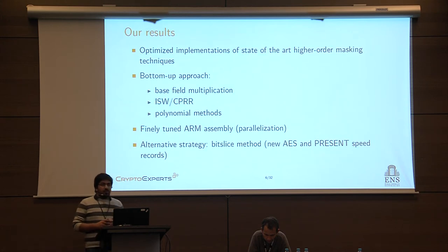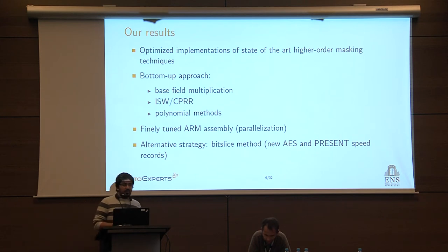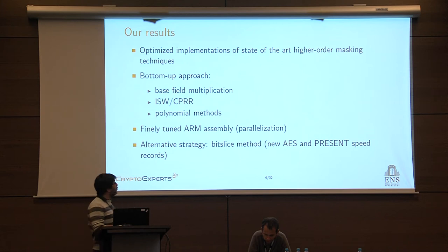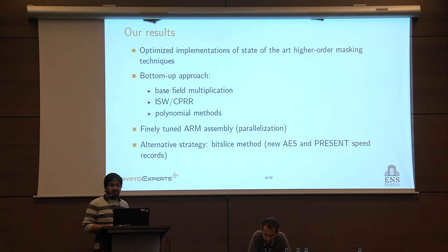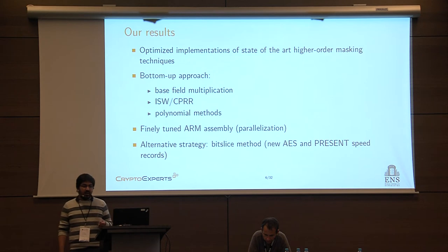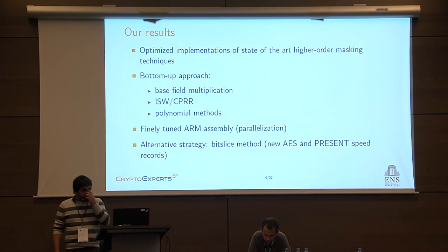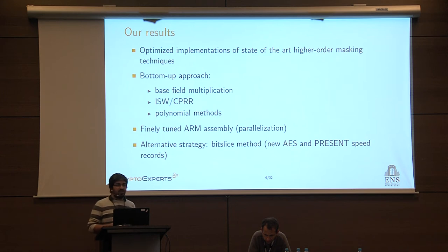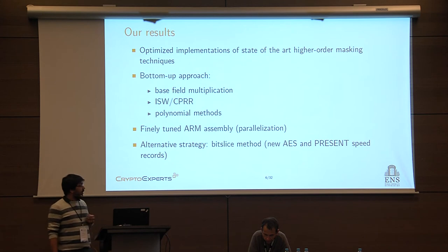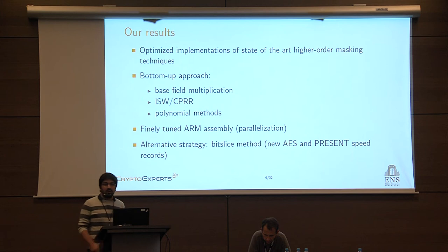In this work, what we try to do is propose optimized implementations of all these state-of-the-art techniques to be able to compare them. To this purpose, we follow a bottom-up approach. First, we looked at how to perform base field multiplication in the most efficient way. Then, how to implement the non-linear operations such as the ISW multiplication or one of its variants. Then, we looked at the polynomial methods. All these implementations are done in ARM assembly and are optimized for each layer. In the second part, we look at an alternative strategy: the bit-slice method, which has been used to design new block ciphers optimized for higher-order masking. Here we show that we can also apply this strategy to already existing block ciphers and obtain speed records for higher-order masking implementation.